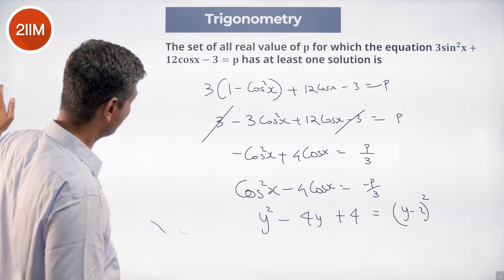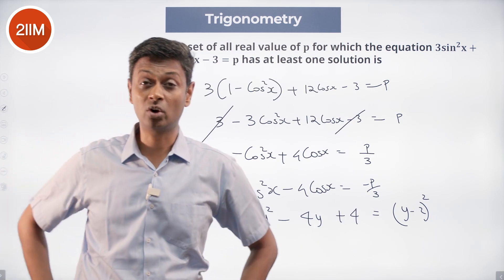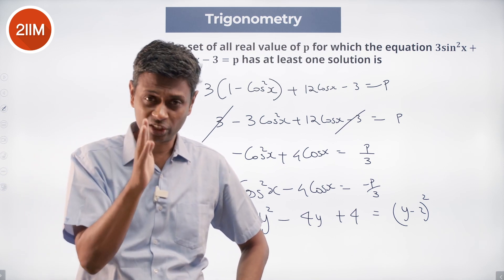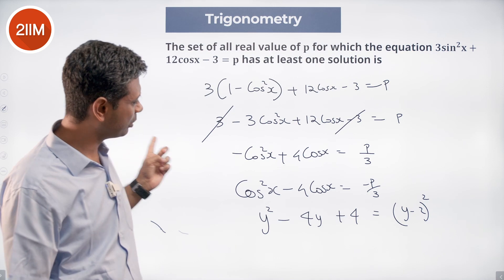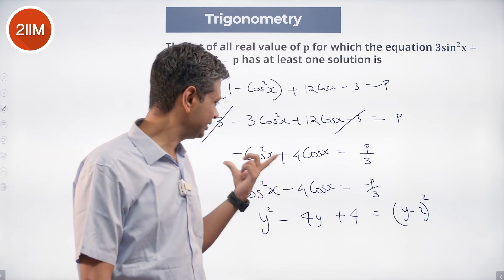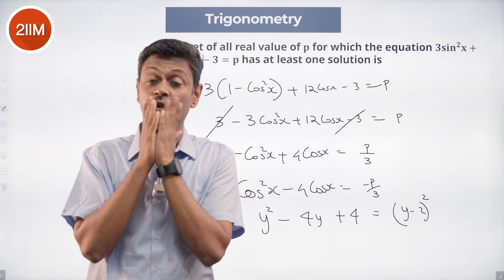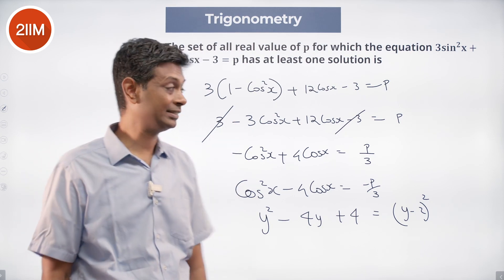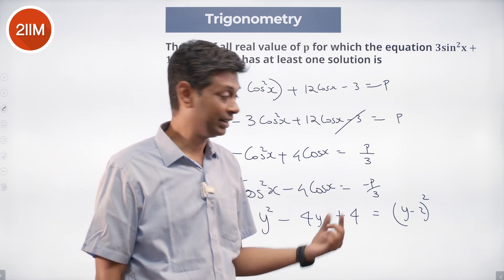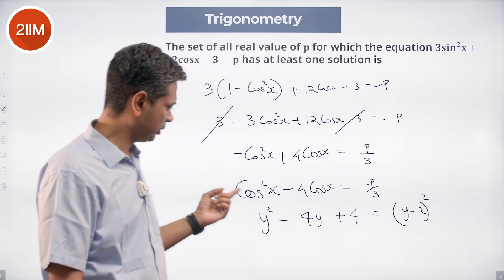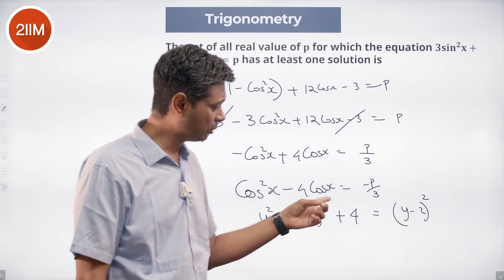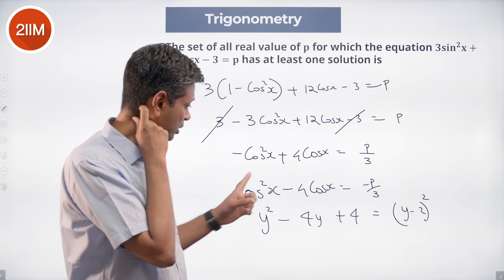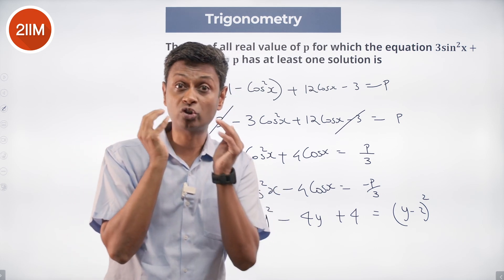To summarize what we did: we had sin²x and cosx together, so we eliminated sin²x by substituting sin²x = 1 - cos²x, giving a quadratic expression in cosx. We didn't want the coefficient of the cos²x term to be -3, so we simplified to get cos²x - 4cosx = -p/3. Recognising that y² - 4y + 4 = (y - 2)², we complete the square.